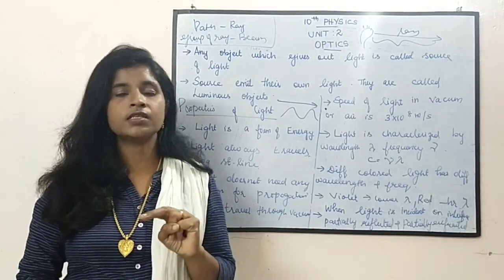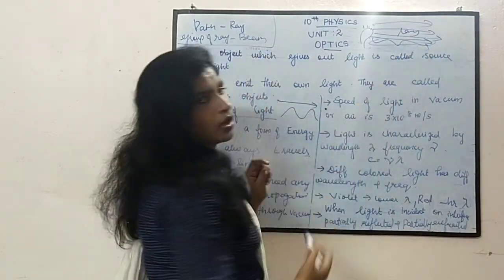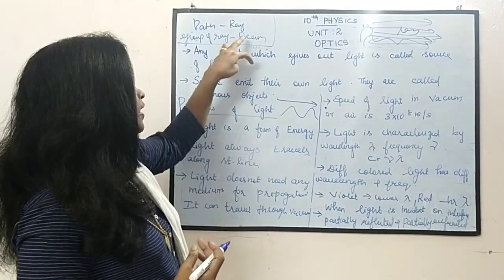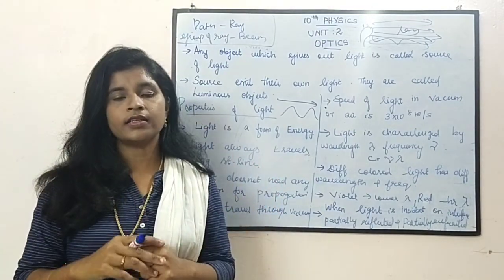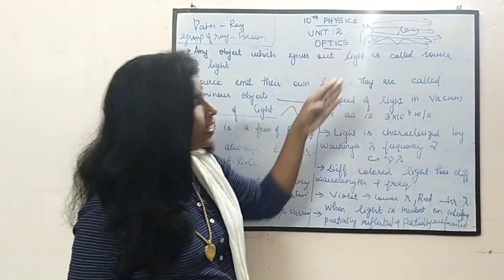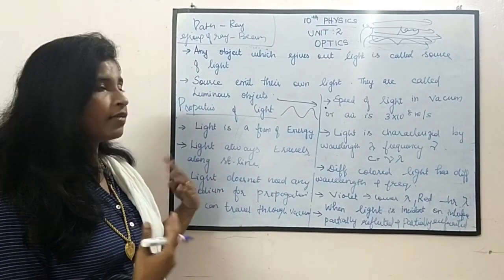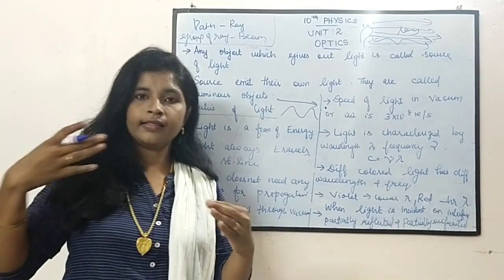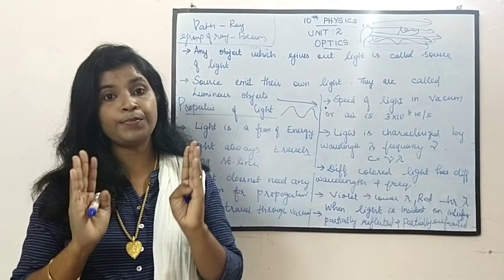If there are so many rays coming from the source, we can call this group of rays as a beam of light. The ray of light means the path travelled by the light. A group of these rays is called as beam of light. Hereafter, we will be using these two terms in this unit — ray and beam.